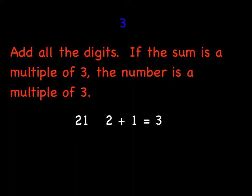Twenty-one, its two digits are two and one. If I add them up, their sum is three. Three is a multiple of three, so 21 has three as one of its factors.